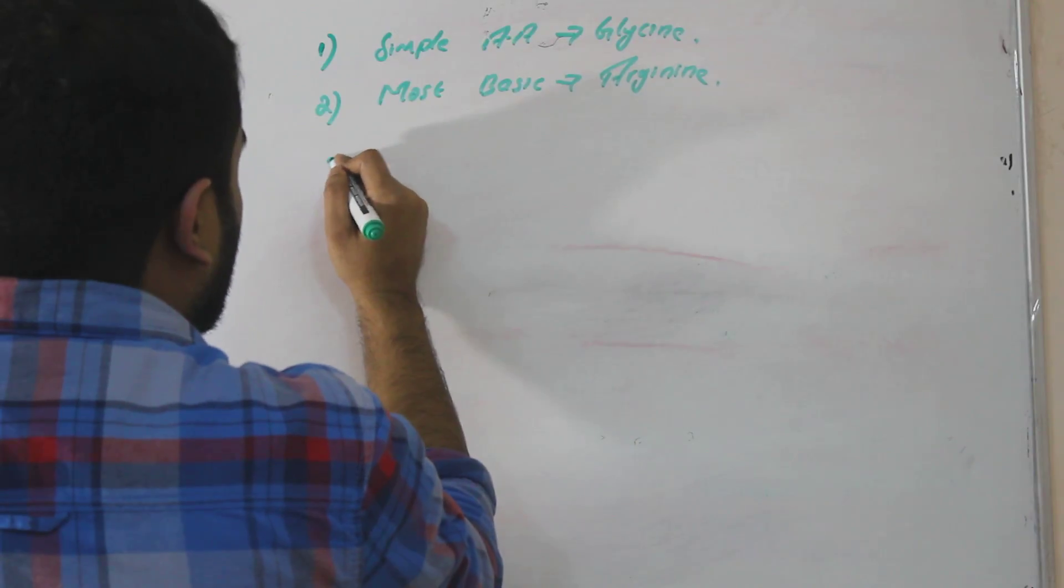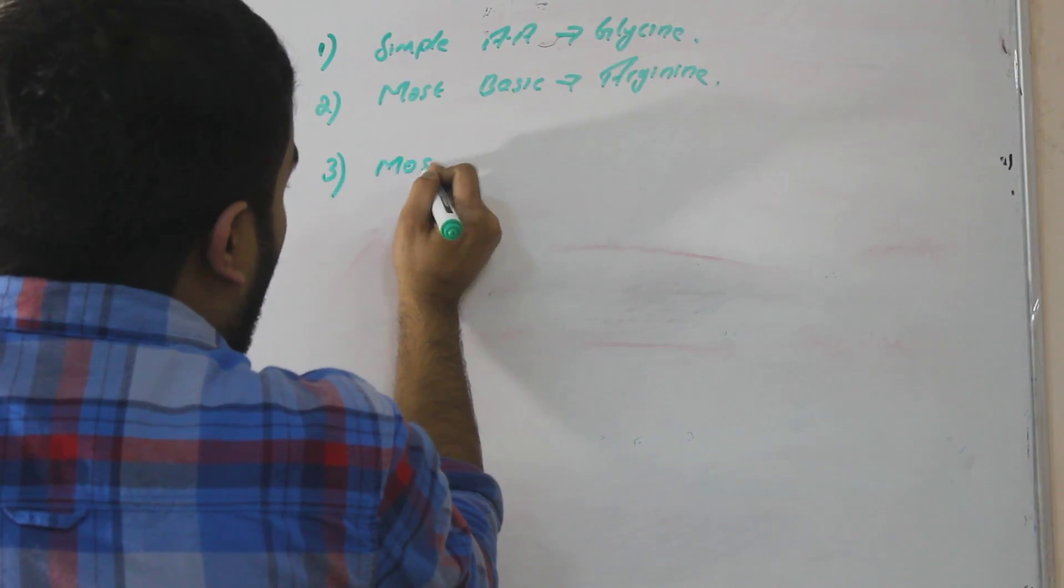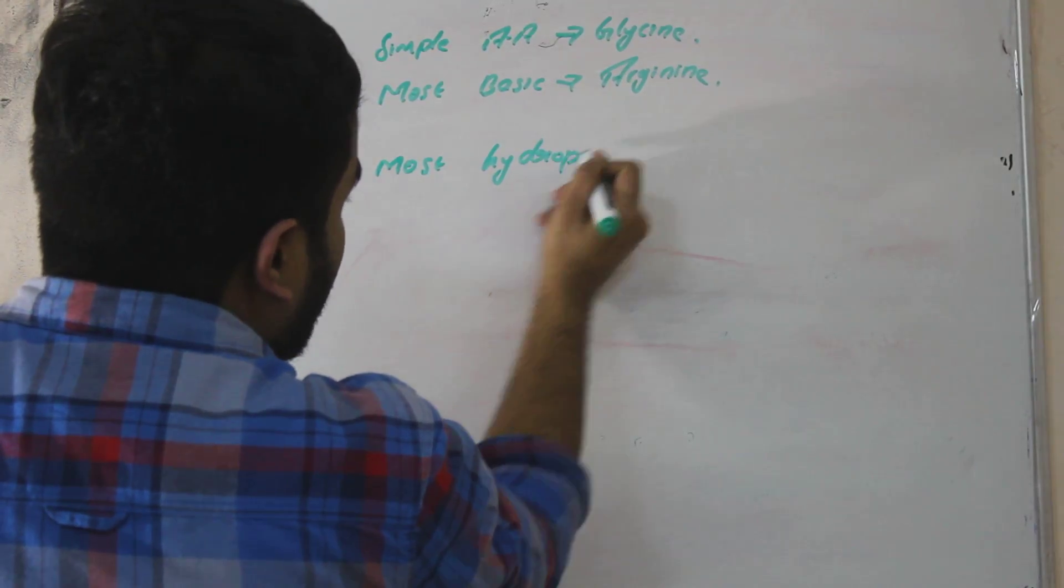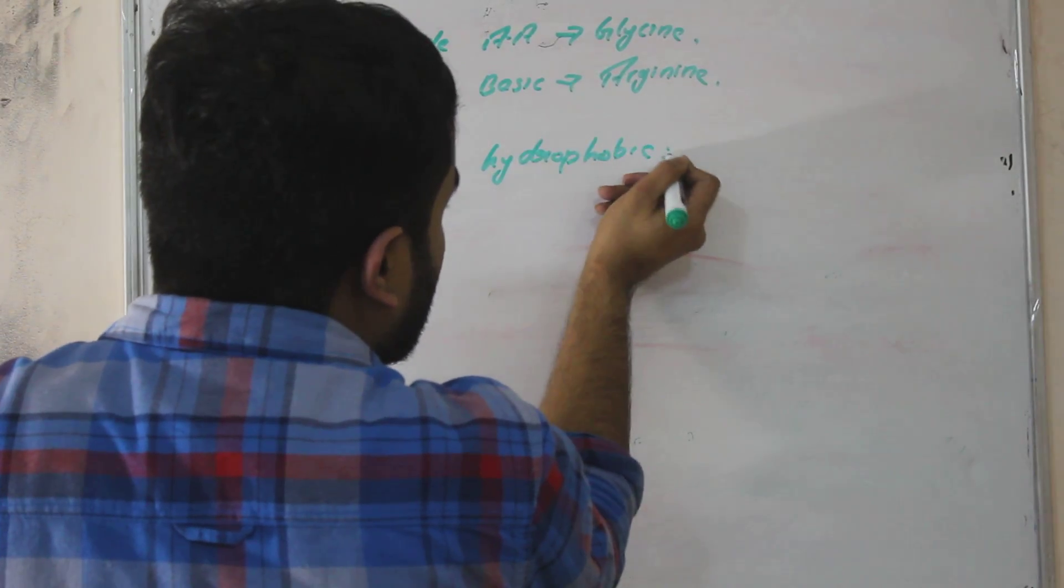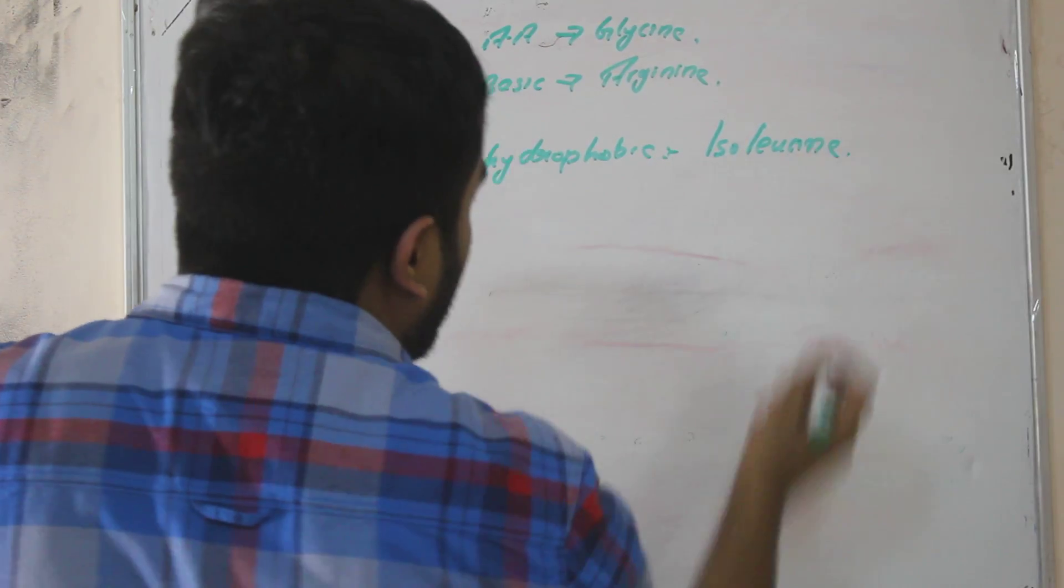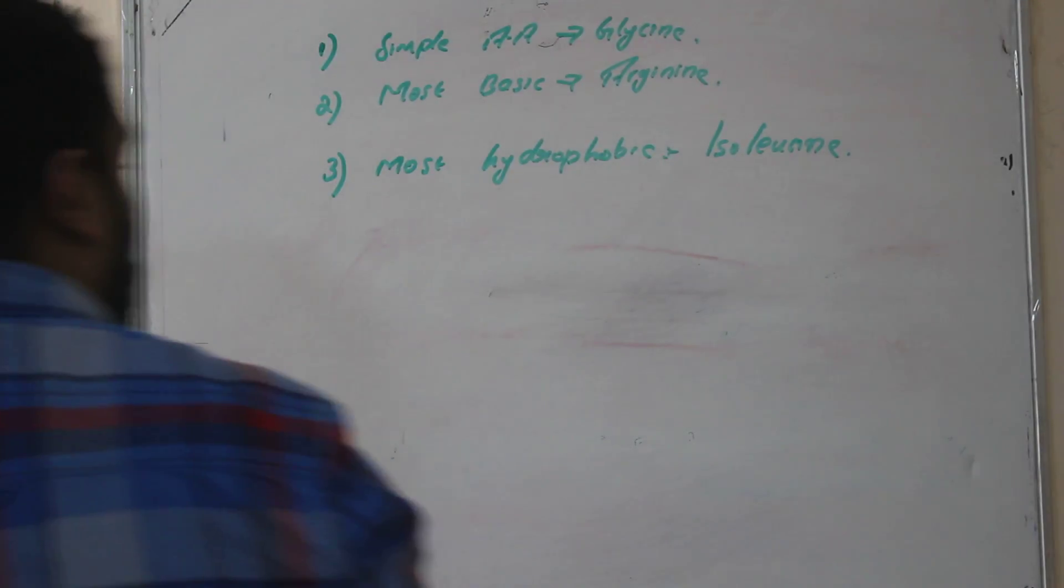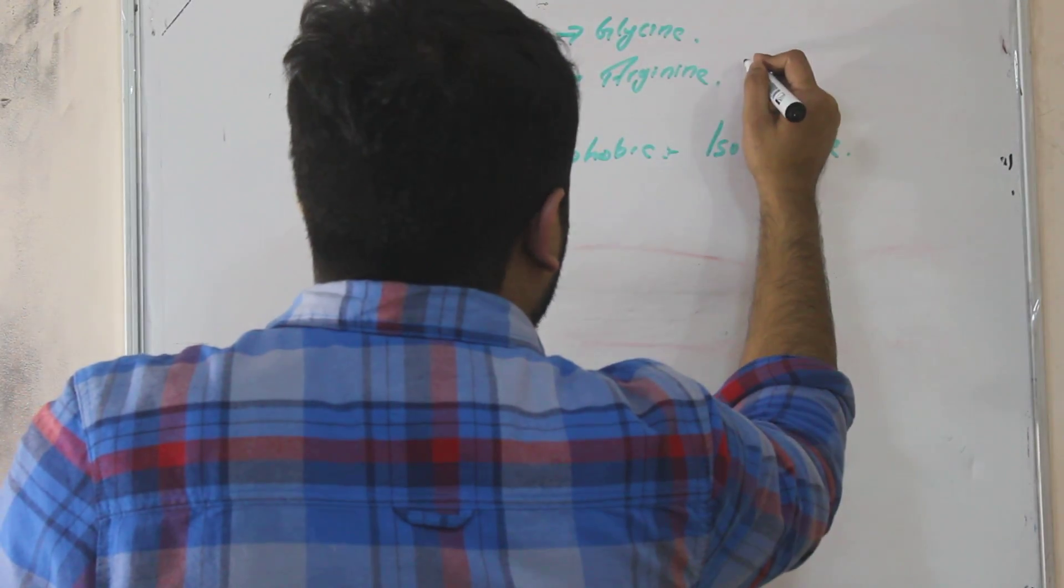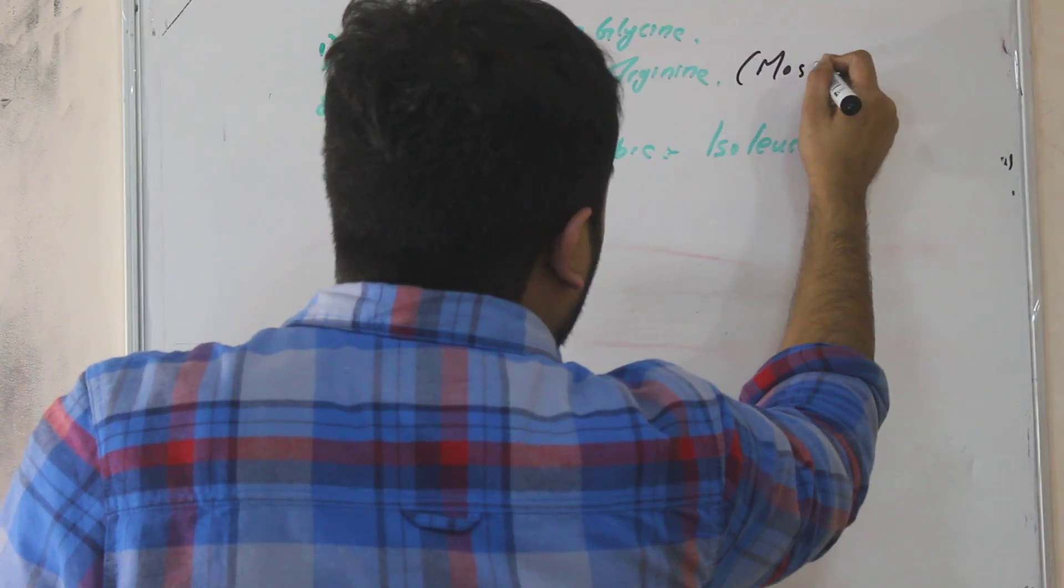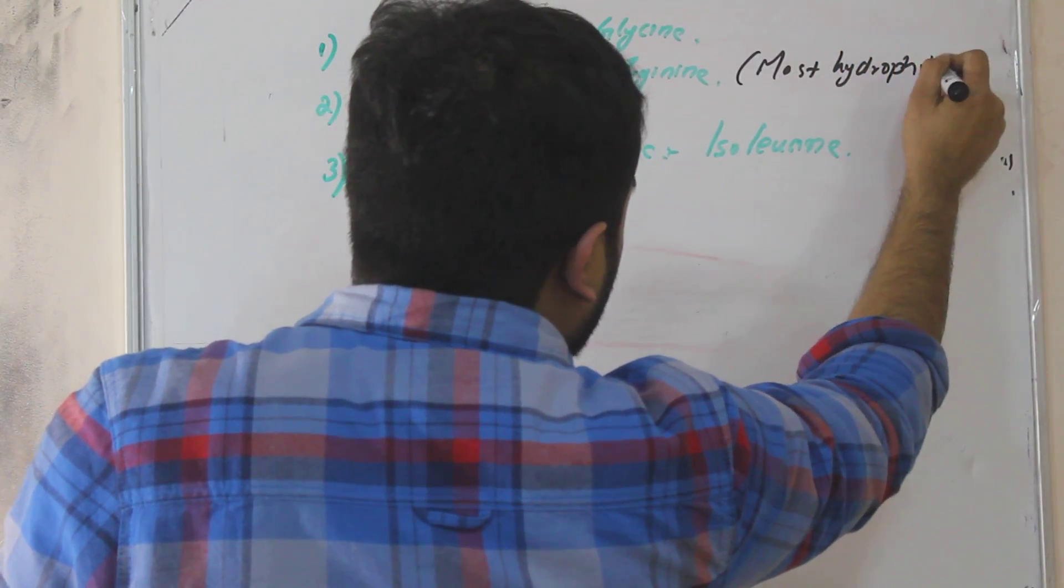Most hydrophobic is isoleucine. Most hydrophobic is isoleucine. For this arginine you can add it is also the most hydrophilic. It's also most hydrophilic as well as most basic.